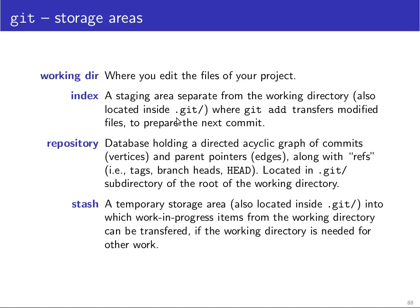If you type git add, then git add transfers a modified file from the working area into the index area. A commit is being prepared in the index area. The repository is the database that holds the directed acyclic graph of commits and parent pointers, and the refs — the tags, branch heads and so on. That's also located in the .git subdirectory.